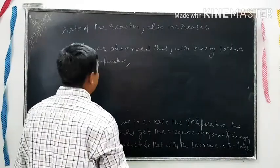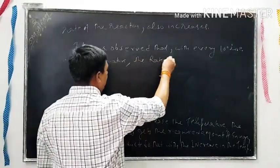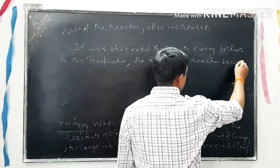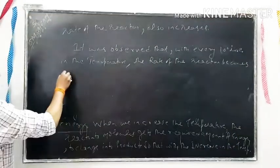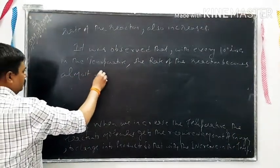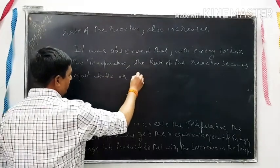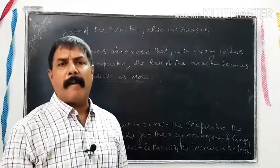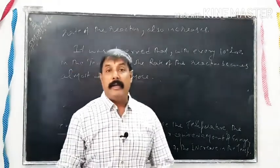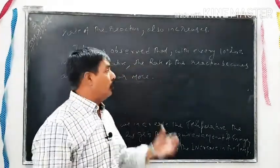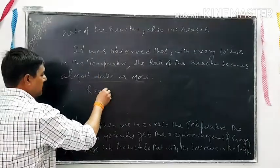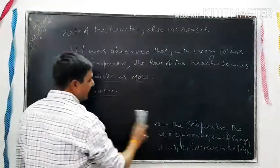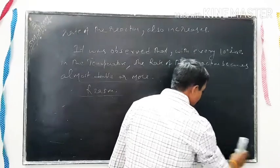यह लिखो: with 10 degree rise in temperature, the rate of the reaction becomes almost double or more। अगर हम 10 degree तापमान में बढ़ोतरी करते हैं तो rate of reaction लगभग double से ज्यादा हो जाता है। इसका reason हम graph के साथ आगे समझेंगे।